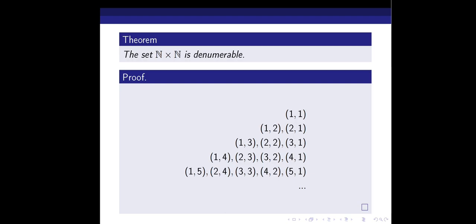We are trying to arrange all the elements of N×N in some particular order and then define an explicit function which becomes a bijection from the set of all natural numbers onto N×N. For that, let's arrange the elements in this form: the first row contains only (1,1); the second row contains (1,2) and (2,1); the third row contains (1,3), (2,2), (3,1); and the fourth row contains (1,4), (2,3), (3,2), (4,1), and so on.